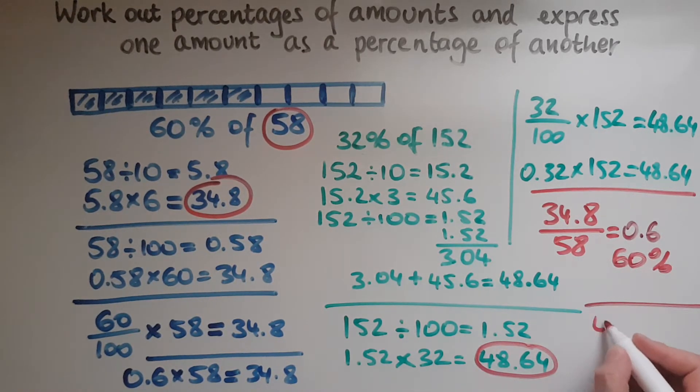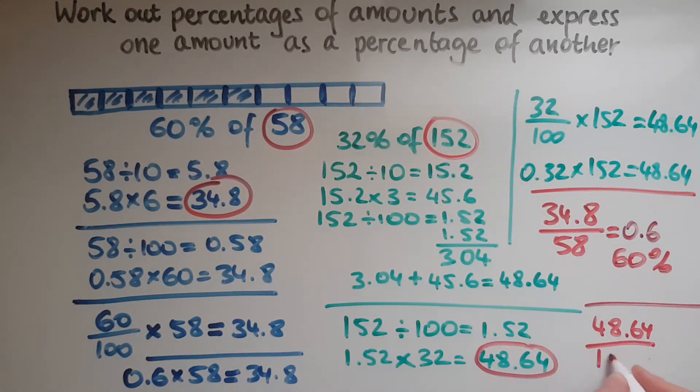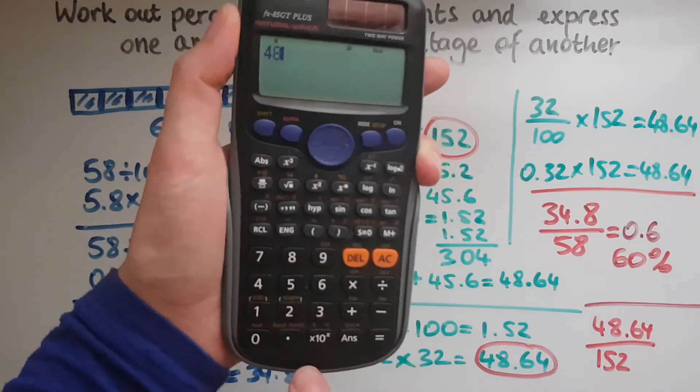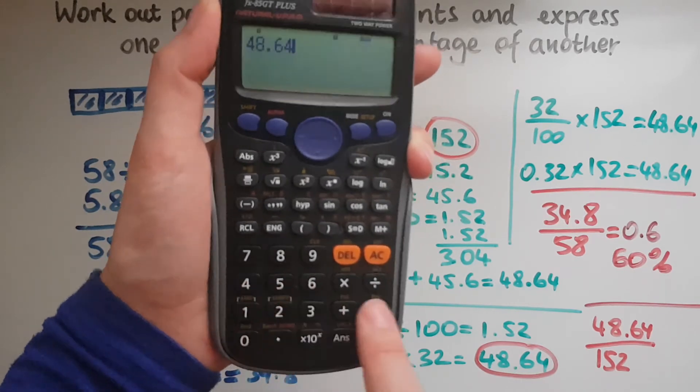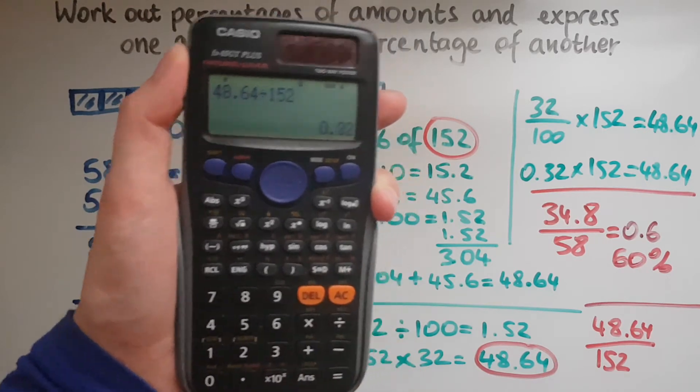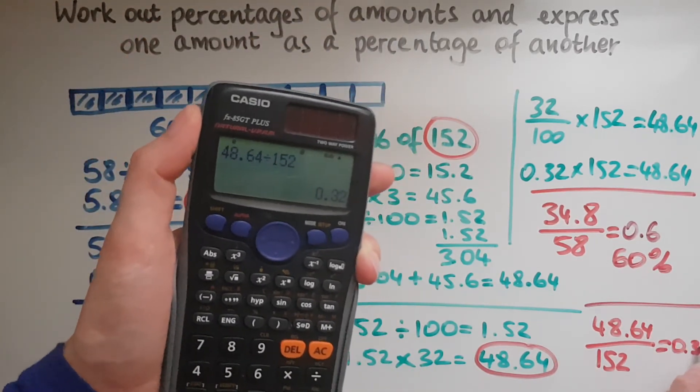So 48.64 out of 152. So 48.64 divided by 152.